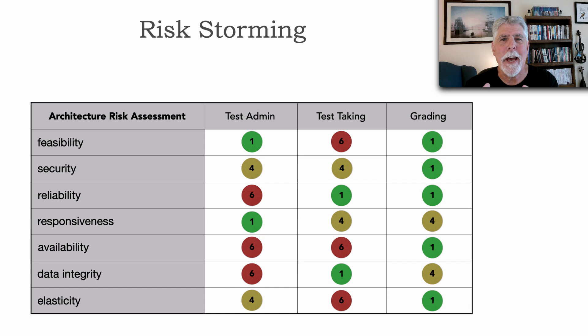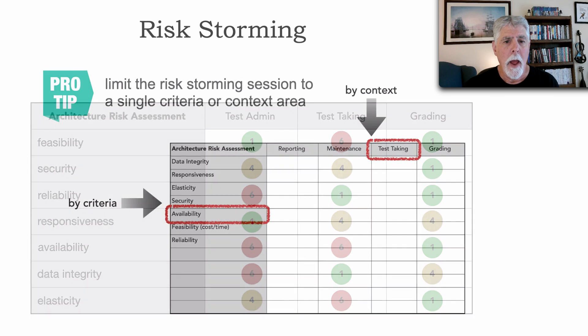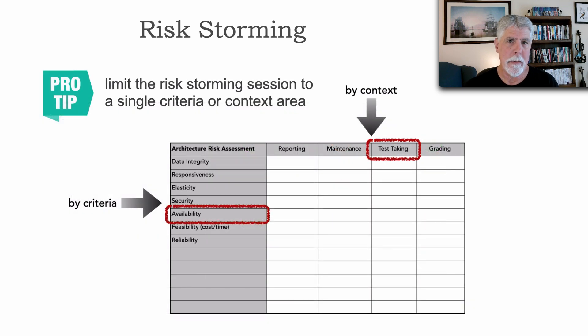Well, that was the kind of very quick tour of risk storming, but there's one other thing I want to show you just as a pro tip. And that is try to limit your risk storming sessions to a single criteria or a single context area. For example, maybe after a lot of changes, we say, we're going to do a risk assessment based on availability across all the areas of the system.